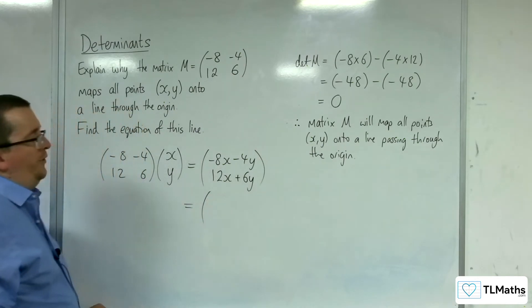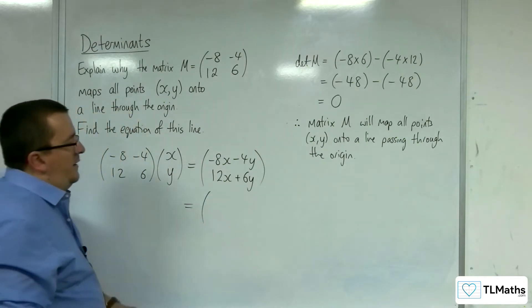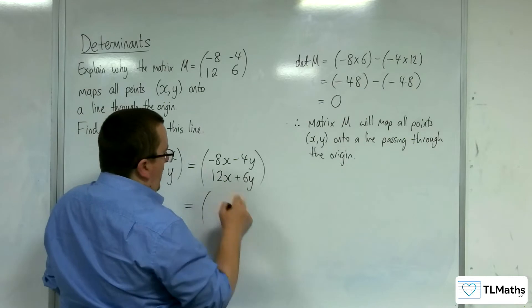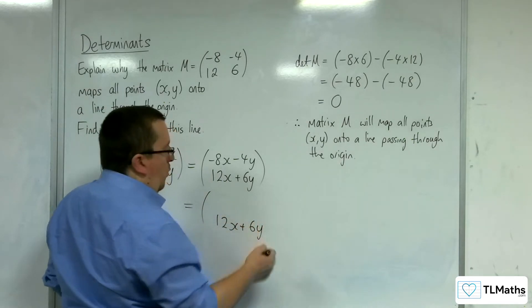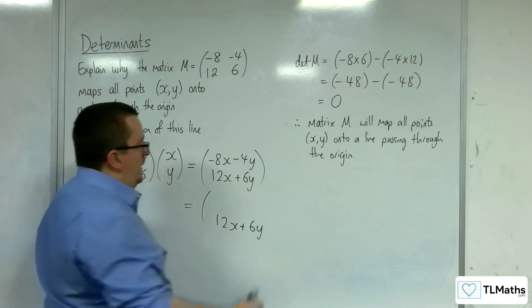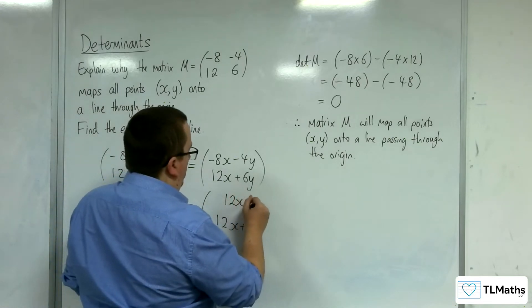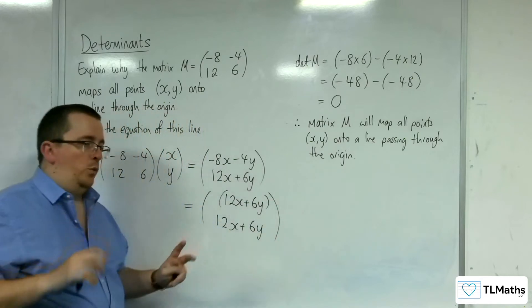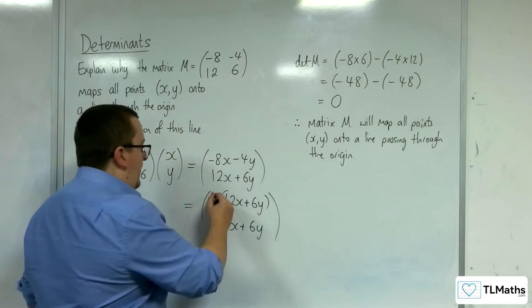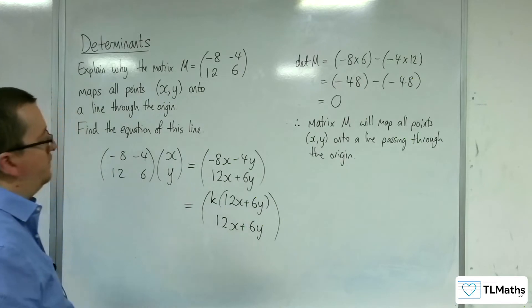Now, what we'd want to do here is if we can then have the 12x plus 6y as the y-coordinate, and then some multiple of the 12x plus 6y as the x-coordinate. So, we've got this missing value here that I am interested in.